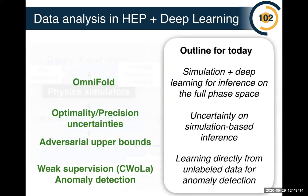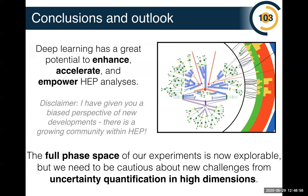In summary: I started with the immense potential of simulation-based inference for accessing our full phase space, using OmniFold — a deep convolutional unfolding approach. I then categorized uncertainty as optimality versus accuracy and discussed adversarial upper bounds for high-dimensional bias uncertainties. I then covered learning directly from data without labels, introduced weak supervision via CWoLa, and showed that it can be used for anomaly detection, ending with real collision data results from ATLAS released only a couple of weeks ago. Deep learning has great potential to enhance, accelerate, and empower collider physics and fundamental physics more broadly. The full phase space of our experiments is now truly explorable, but we need to be cautious about new challenges from uncertainty quantification in high dimensions.